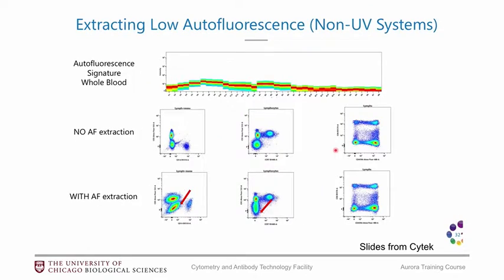It's important to note that if you don't have a lot of autofluorescence — for example in a whole blood sample — using the autofluorescence extraction can produce oddly shaped populations. It ends up looking a lot better if you don't use the autofluorescence extraction in that case. So you should pay attention to how much autofluorescence you have and only use it if you have high autofluorescence.